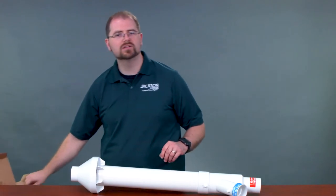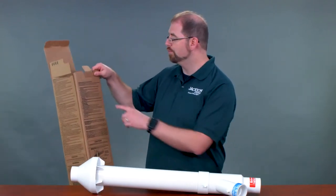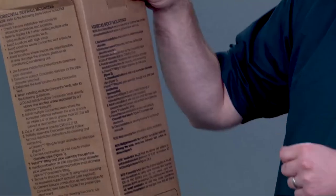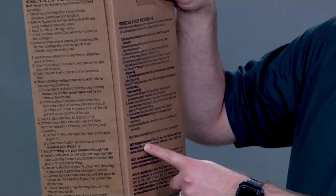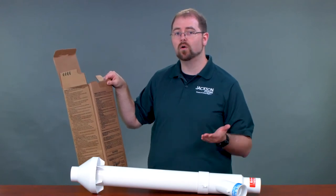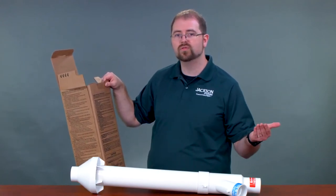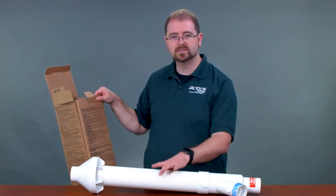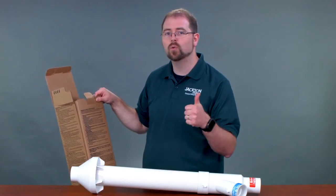All the instructions that you'll need to install this kit are printed on the box that it comes in. So you'll be able to see and read through all the instructions right here. And this is where it will tell you the size of hole that you'll need to cut in either the roof or the side. This can be installed horizontally or vertically.